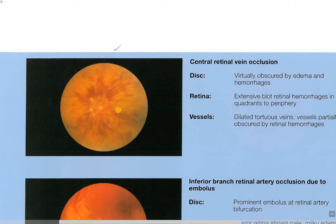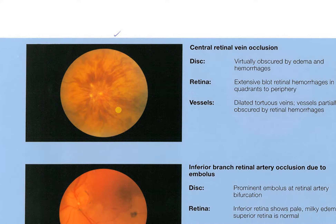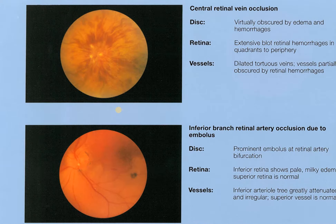By the way, all these things we're going over — you do not have to identify these things on a test. This is just FYI stuff. We're just going over it to show you the purpose of looking in the back of the eye and the different things you can find. Blood vessels, disc — everything is obliterated; there's really nothing there.